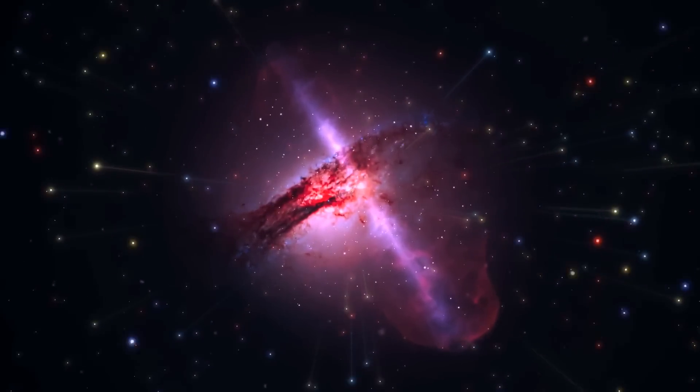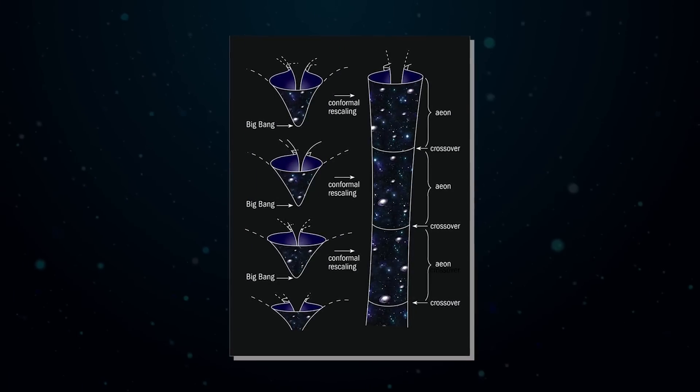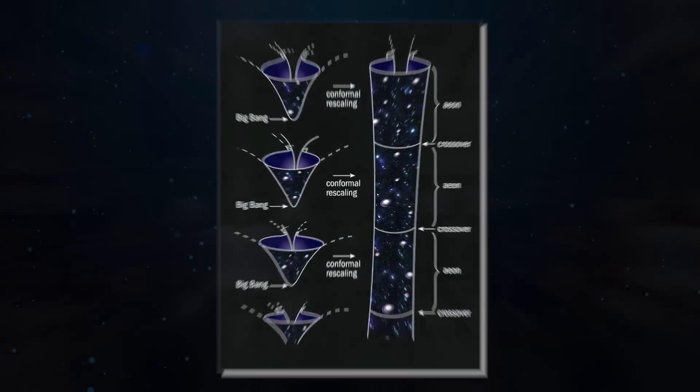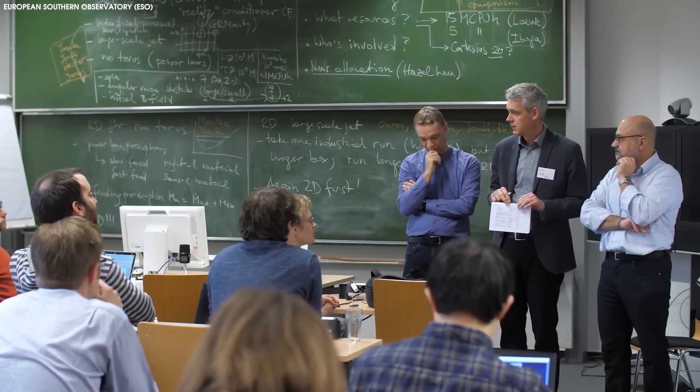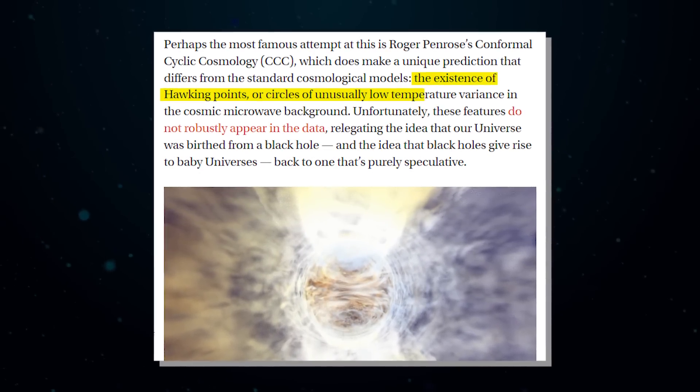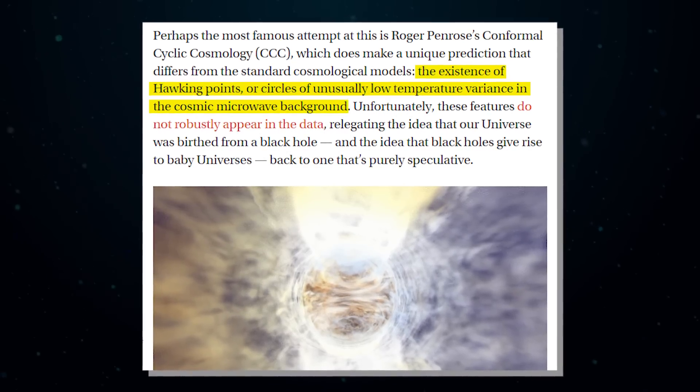Perhaps the most famous attempt at this is Roger Penrose's Conformal Cyclic Cosmology, or CCC, which does make a unique prediction that differs from the standard cosmological models, the existence of hawking points or circles of unusually low temperature variance in the cosmic microwave background.